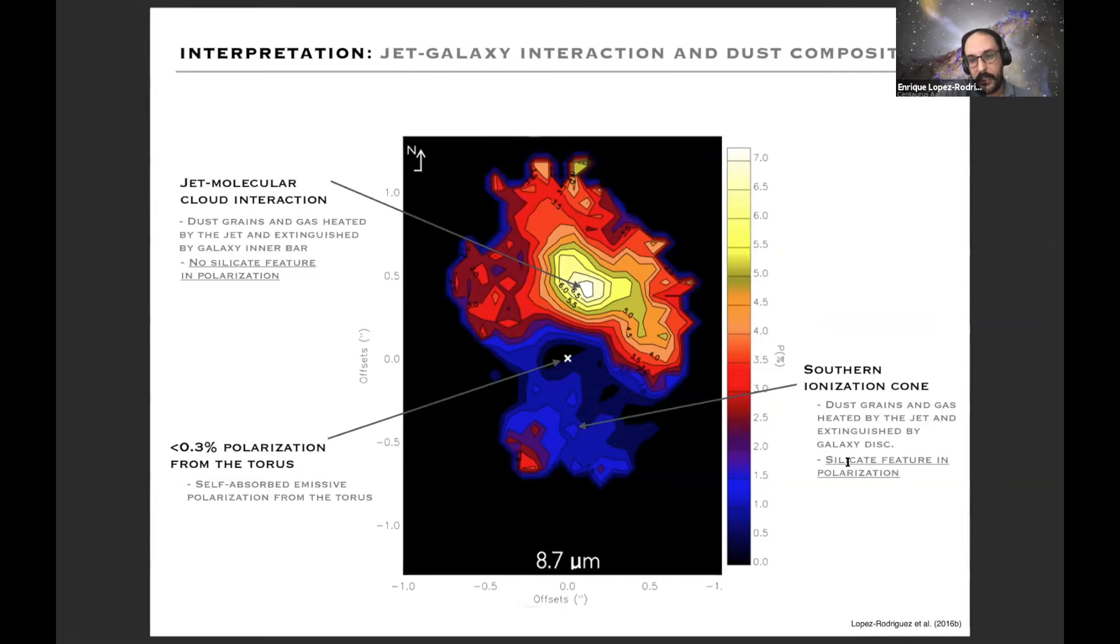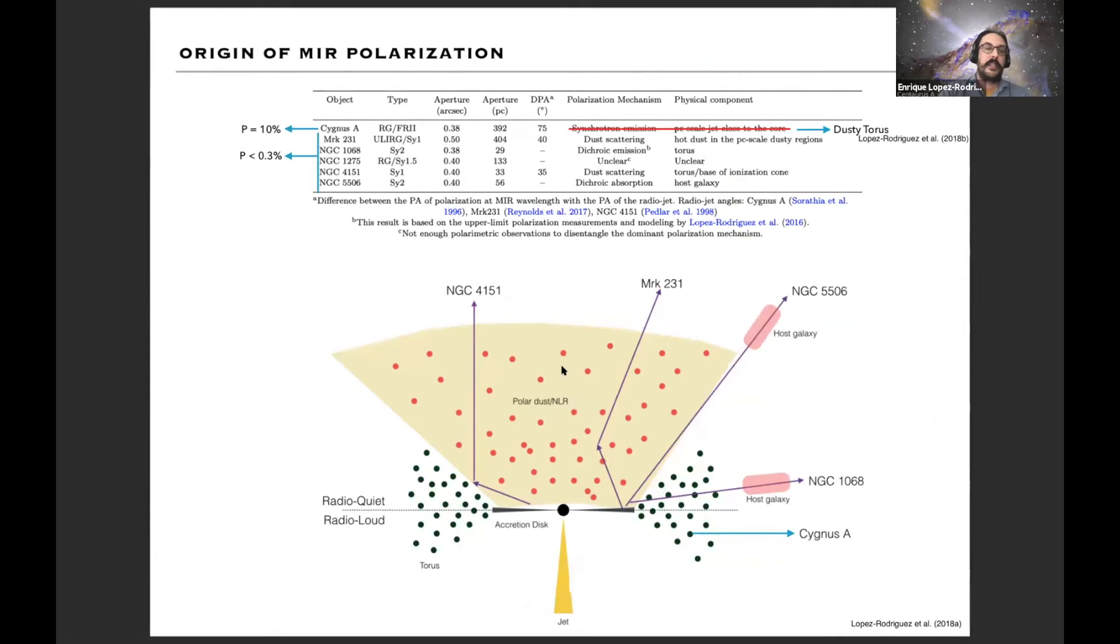Surprisingly, the core at an angular resolution of 0.3 arcseconds is consistent with unpolarized polarization where we interpret a self-absorbed emission polarization from the torus. You have magnetically aligned grains that may be polarized, but because you have such a long column of dust between the torus and us, it actually self-absorbs in the path through the galaxy itself.